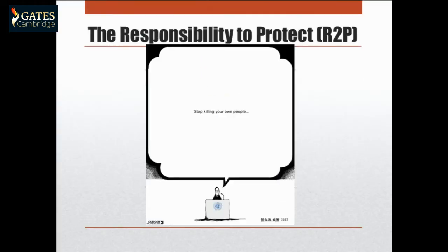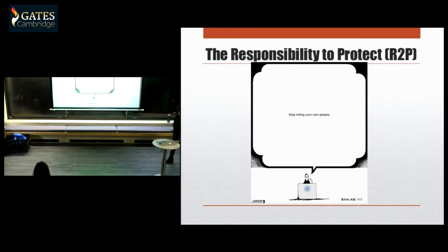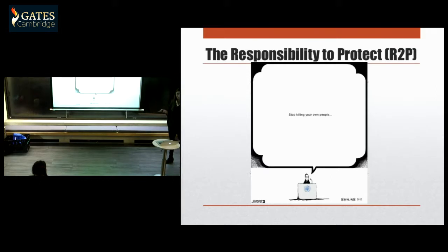So what is really the responsibility to protect? In 2005, world governments agreed and came to a consensus that they have the responsibility to protect their populations from crimes including ethnic cleansing, genocide, war crimes, and crimes against humanity. It was nothing entirely new — these were already regulated through United Nations conventions such as the Genocide Convention or the Geneva Conventions.